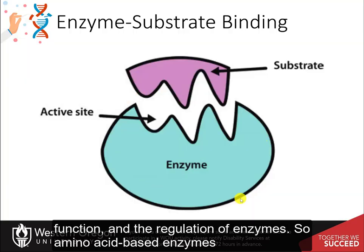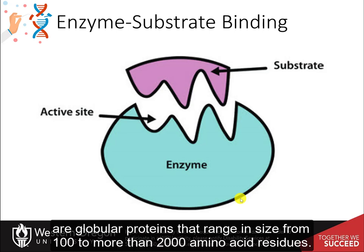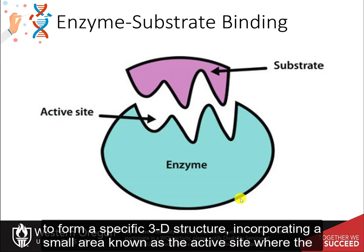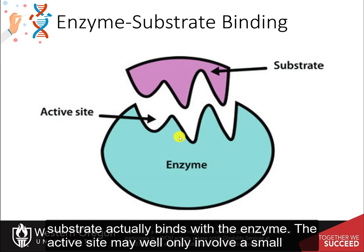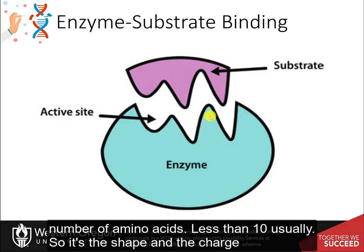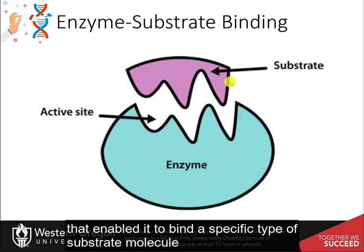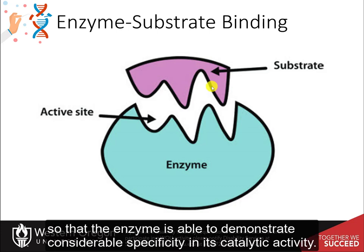Amino acid-based enzymes are globular proteins that range in size from 100 to more than 2,000 amino acid residues. These amino acids can be arranged as one or more polypeptide chains that are folded and bent to form a specific three-dimensional structure, incorporating a small area known as the active site where the substrate actually binds with the enzyme. The active site may involve only a small number of amino acids — less than 10 usually. It's the shape and charge properties of the active site that enable it to bind a specific type of substrate molecule, so that the enzyme demonstrates considerable specificity in its catalytic activity.